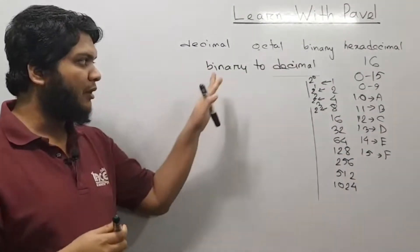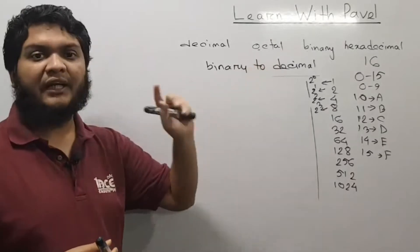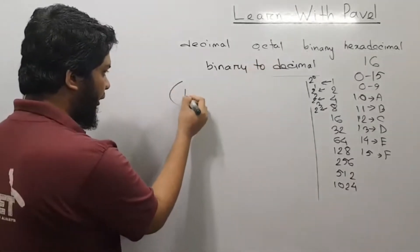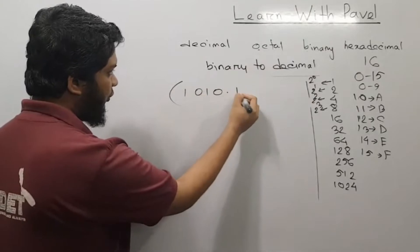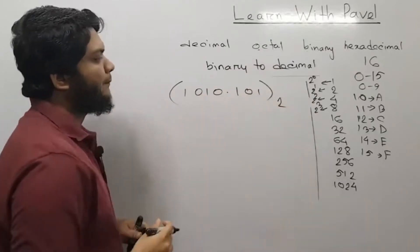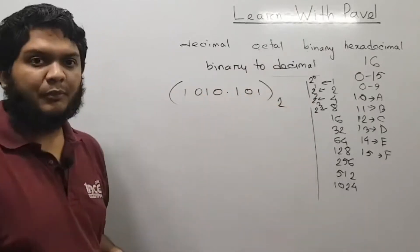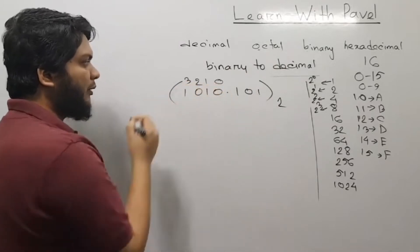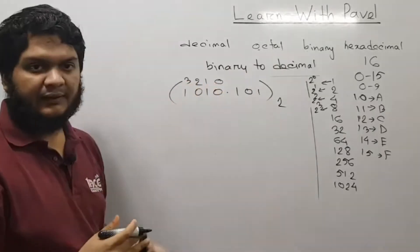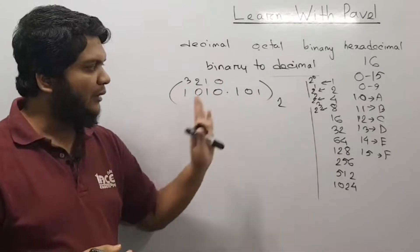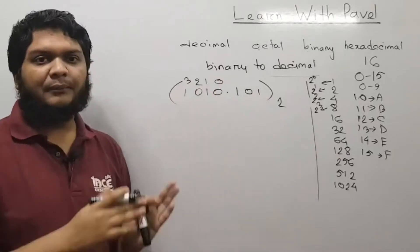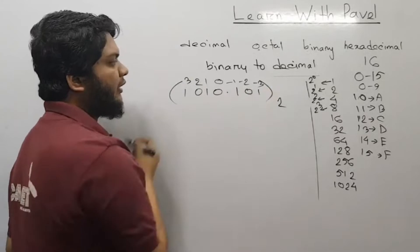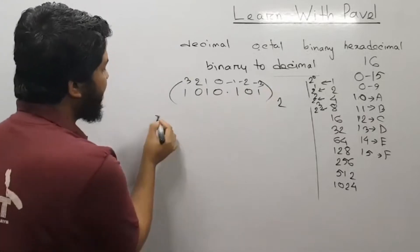I will solve the problem. The problem is 1010.101. Next: 0, 1, 2, 3. Here minus 1, minus 2, minus 3.